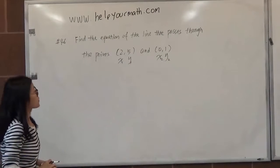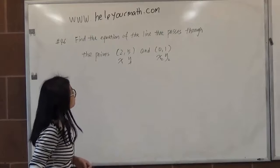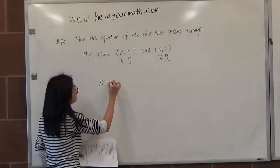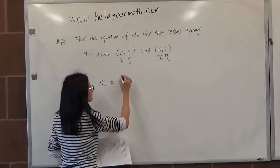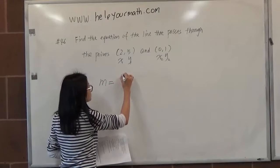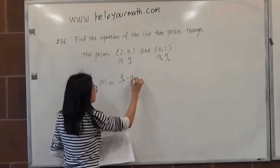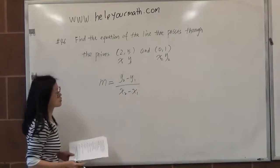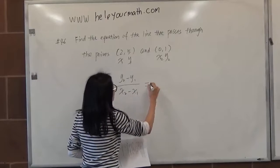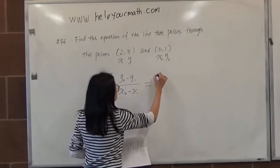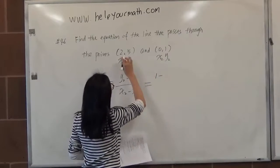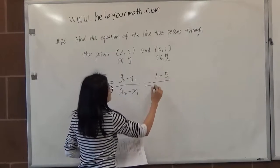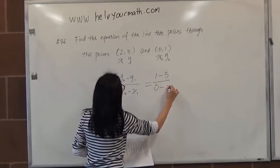Then we can find the slope for this line. The slope formula says we can get the slope by doing y2 minus y1 over x2 minus x1. So therefore we can do substitution now. The y2 equals 1 minus the y1 equals 5 here, over 0 minus 2.